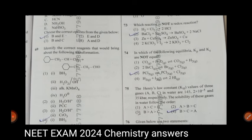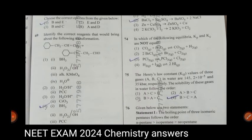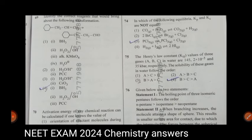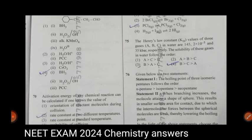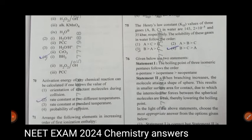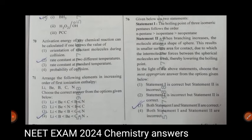Question 75, The Henry's law constant values of three gases. Answer is fourth one. Question 76, given below are two statements. Here the correct statement is third one. The boiling point of three isomeric pentanes follows the order. The answer is third one.